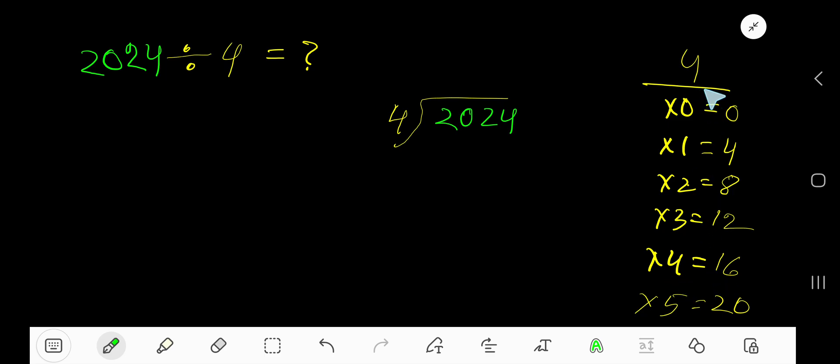To find out the multiplication table of 4, just add 4 with the previous number: 0 plus 4 is 4, 4 plus 4 is 8, 8 plus 4 is 12, 12 plus 4 is 16. Now, 4 goes into 2 how many times? 0 times. 0 times 4 is 0.